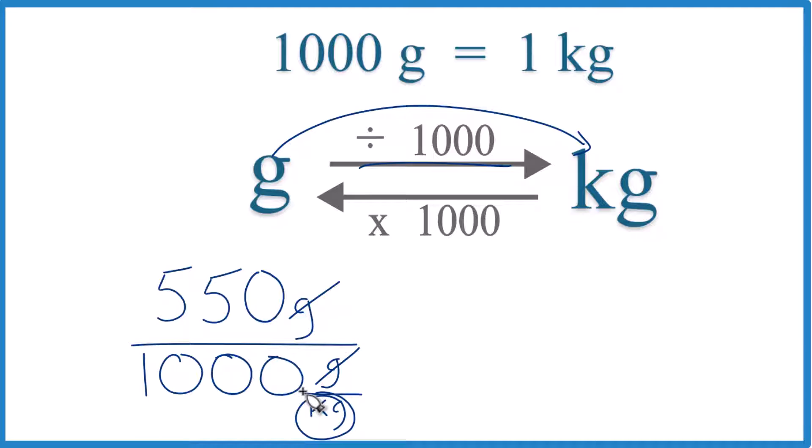So down here we'll move the decimal point 1, 2, 3, so now we just have 1, and up here 1, 2, 3, and 550 grams equals 0.550 kilograms.